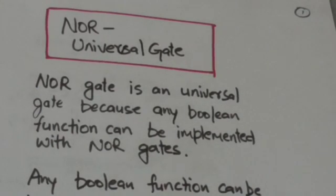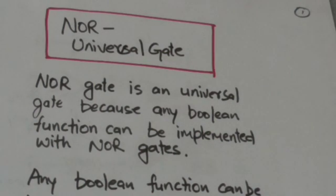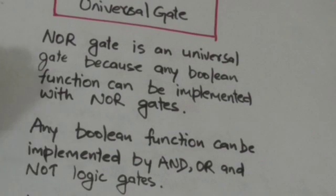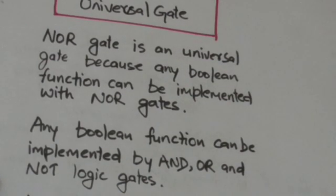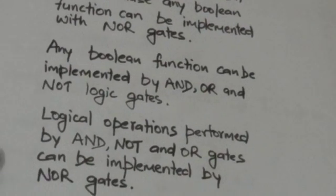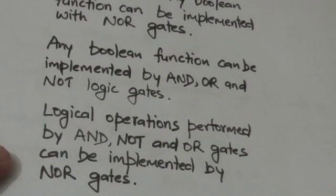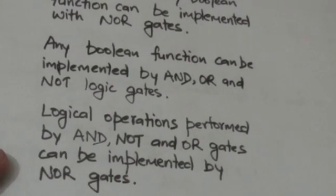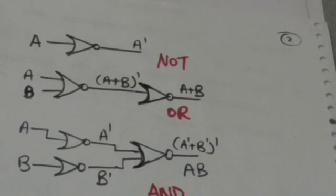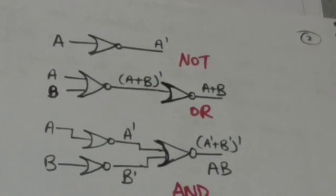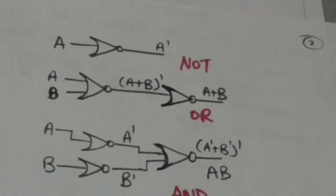Welcome back to the tutorial. In this tutorial we will prove that NOR gate is a universal gate and we can implement any boolean function by NOR gates. We know that any boolean function can be implemented by AND, OR, and NOT logic gates, so we have to prove that the logical operations performed by AND, NOT, and OR gates can be implemented by NOR gates.